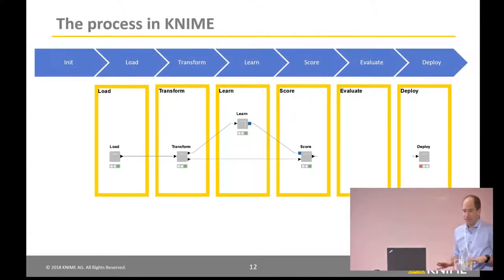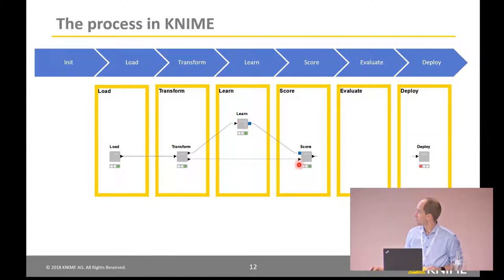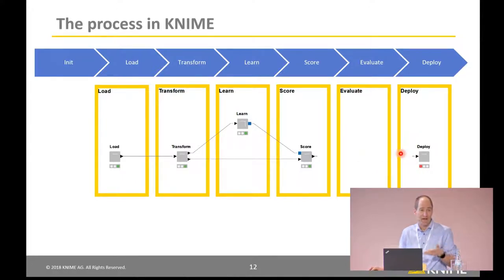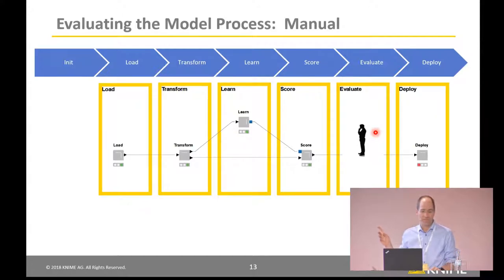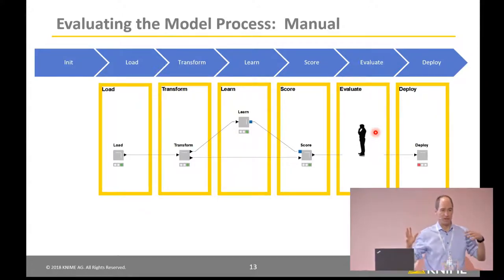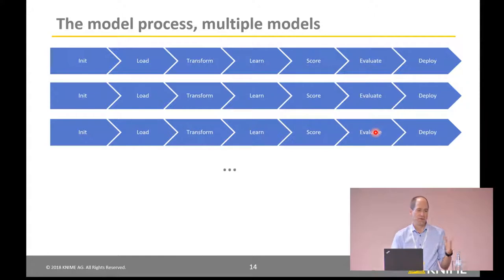We want to implement all of that in KNIME. This is a simple KNIME workflow for doing basically what I just described. Once we've understood the data, we go in and load it, then do transformation. Here's that learn-predict pattern that you keep seeing over and over again — we learn, score, and then deploy. You can imagine running this for one data set and then the next; it's all more or less automated. What happens most of the time is a human being does the evaluation — I build the model, score it, look at the results, decide whether I like it, and if so, deploy it. That works pretty well for a few models — I can look at four or five and be comfortable and make good decisions.